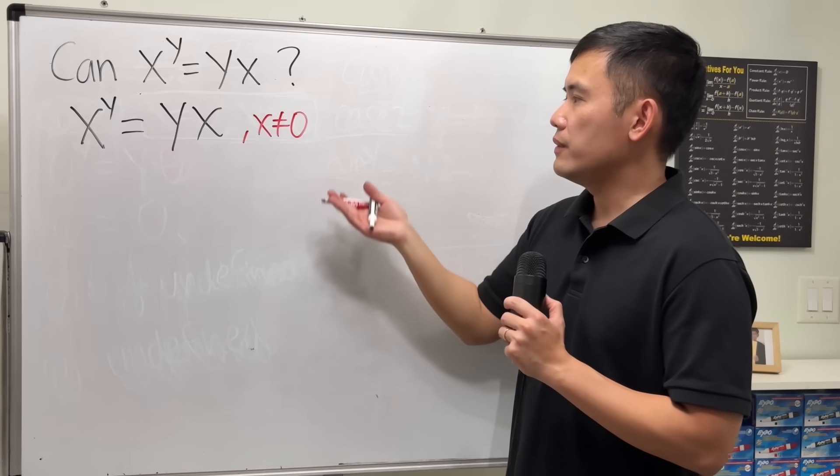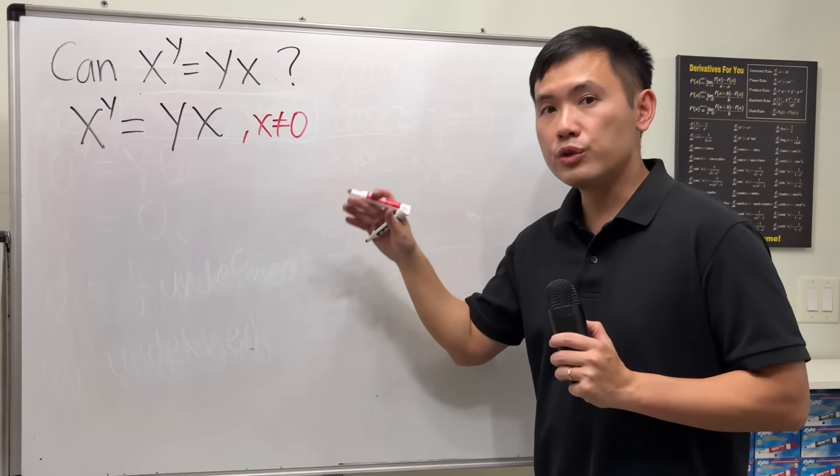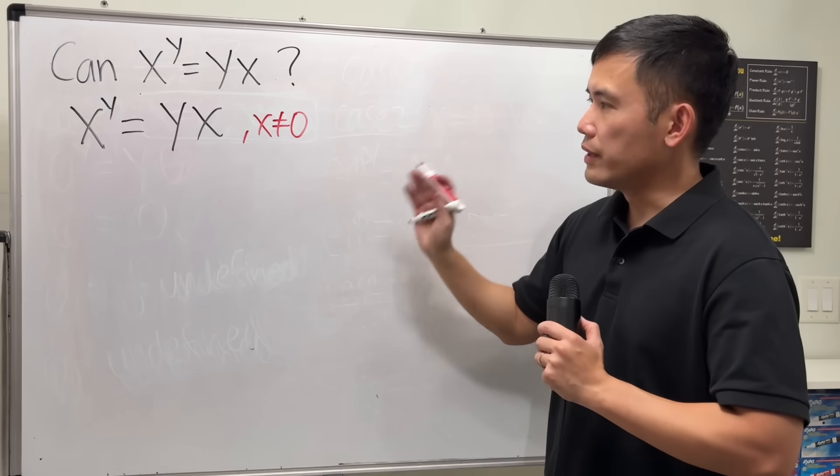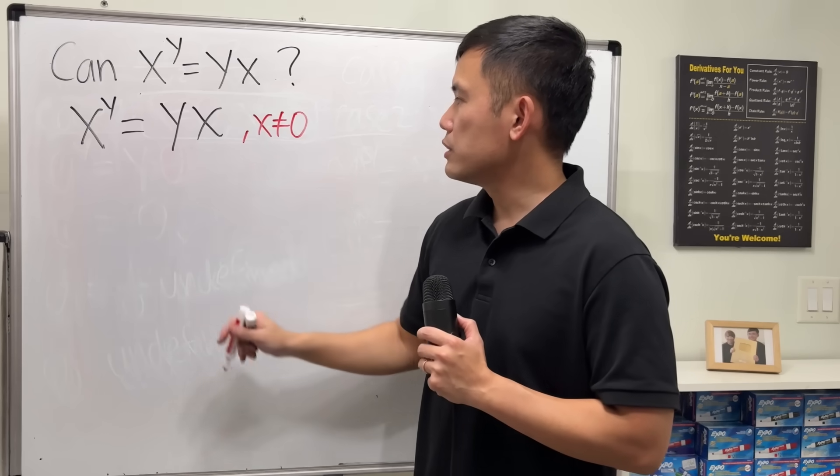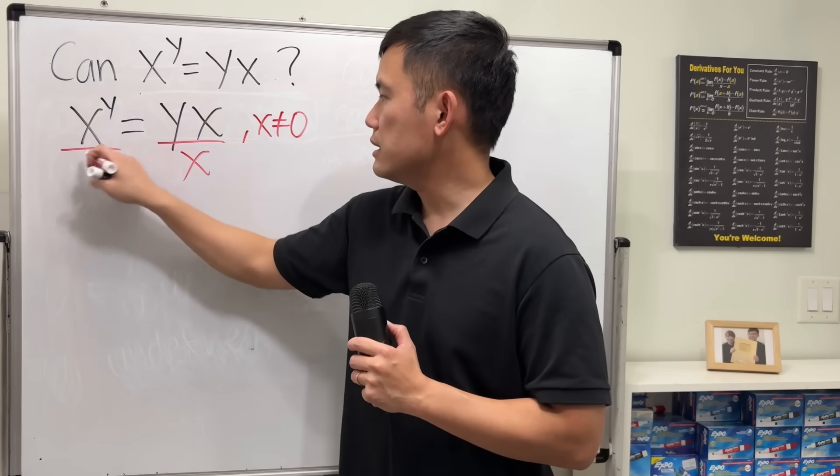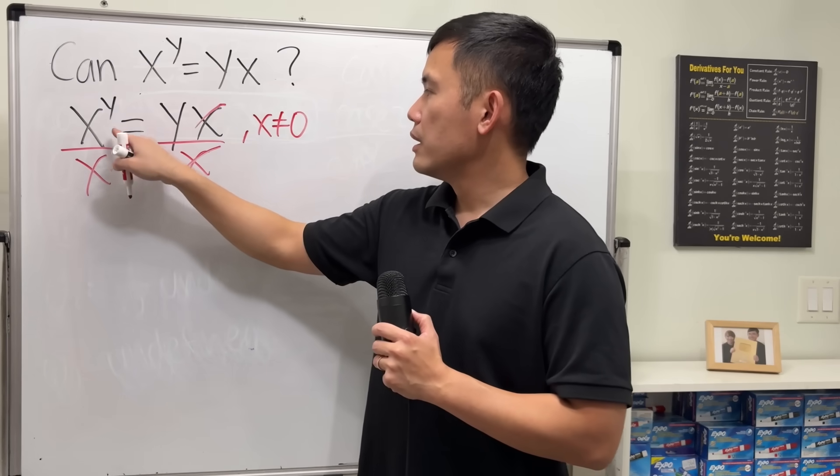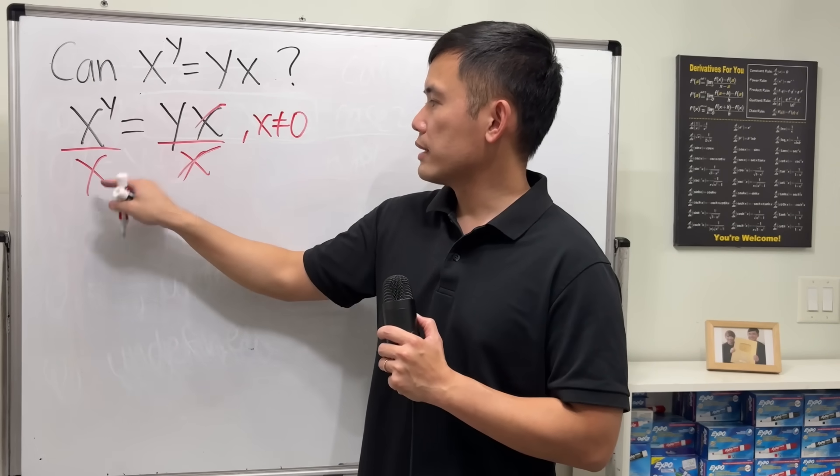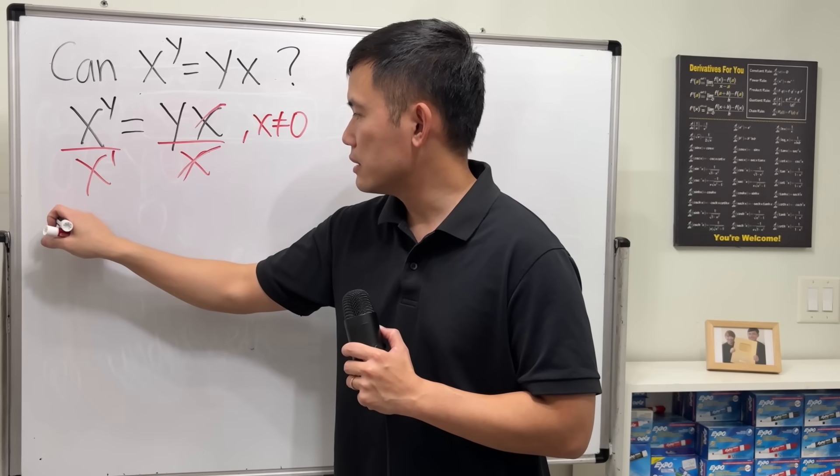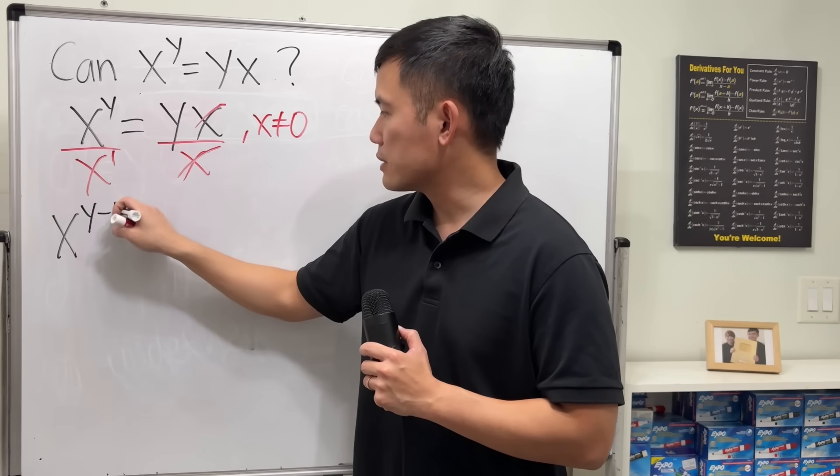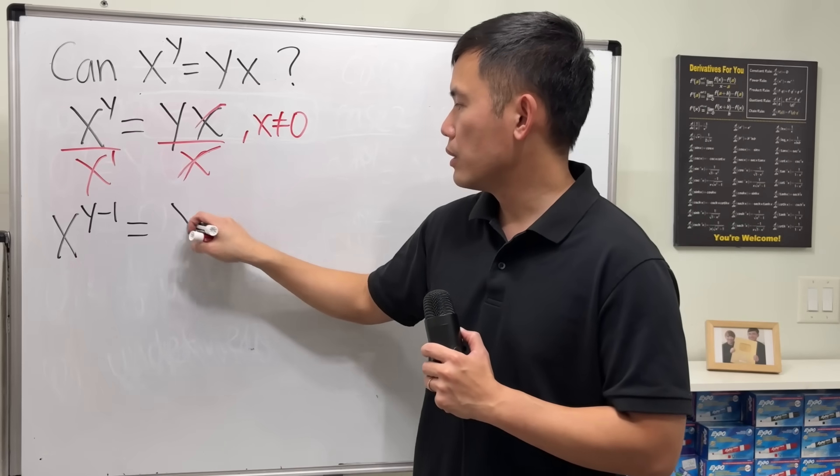Right here, I'm going to first assume that x is not equal to 0. But you may be wondering, what if x is equal to 0? We just have to consider another case. For now, I'm considering the non-zero case. When x is not equal to 0, we can divide x to both sides. Cancel. This is x to the y over x to the first. Rule of exponent tells us that this is x to the y minus 1, and that is equal to y.